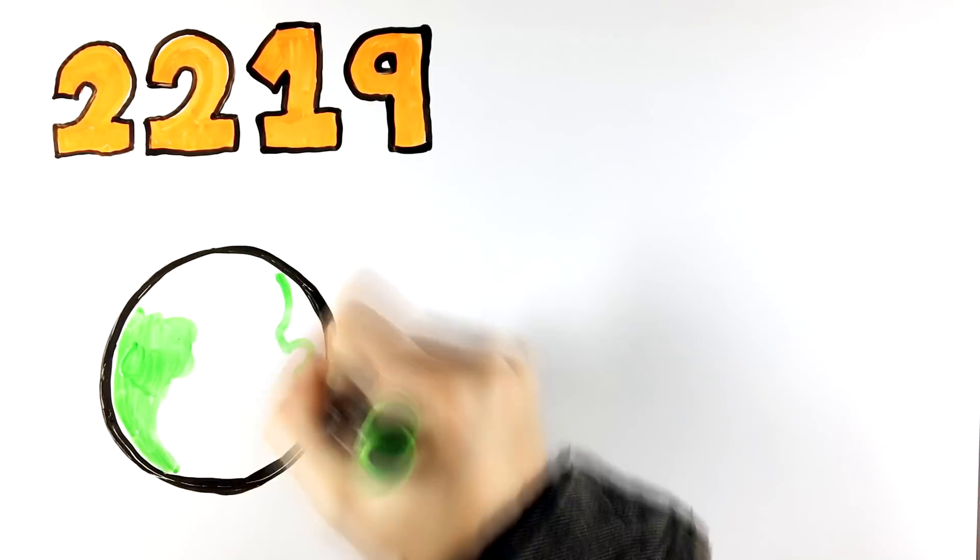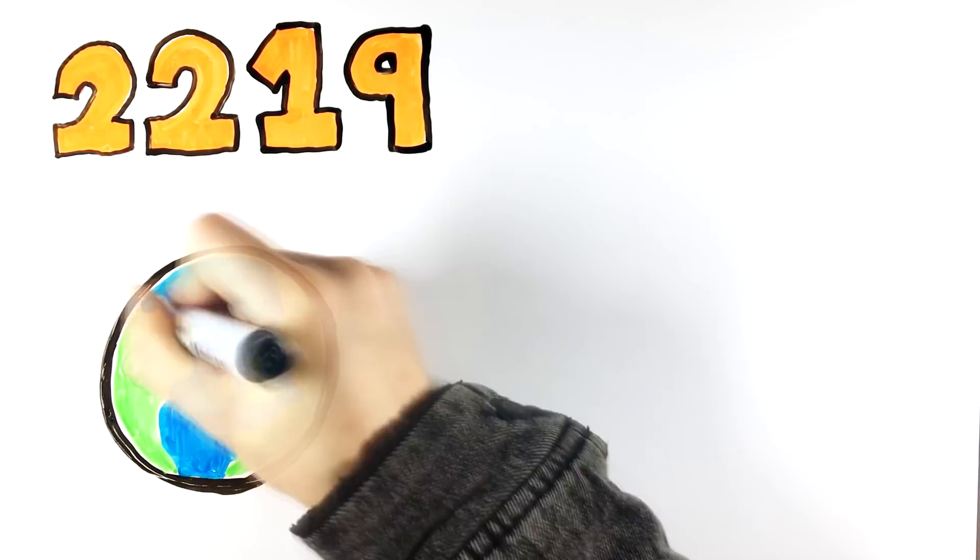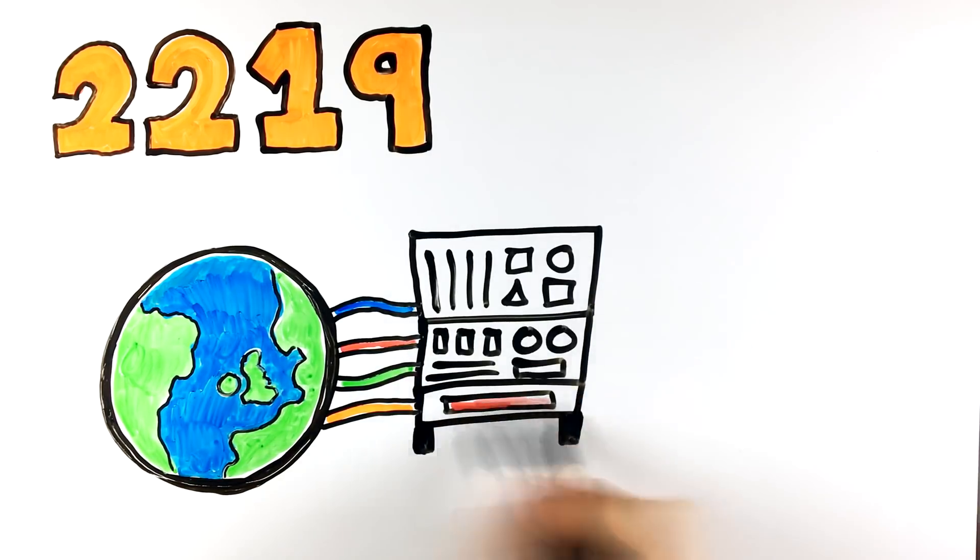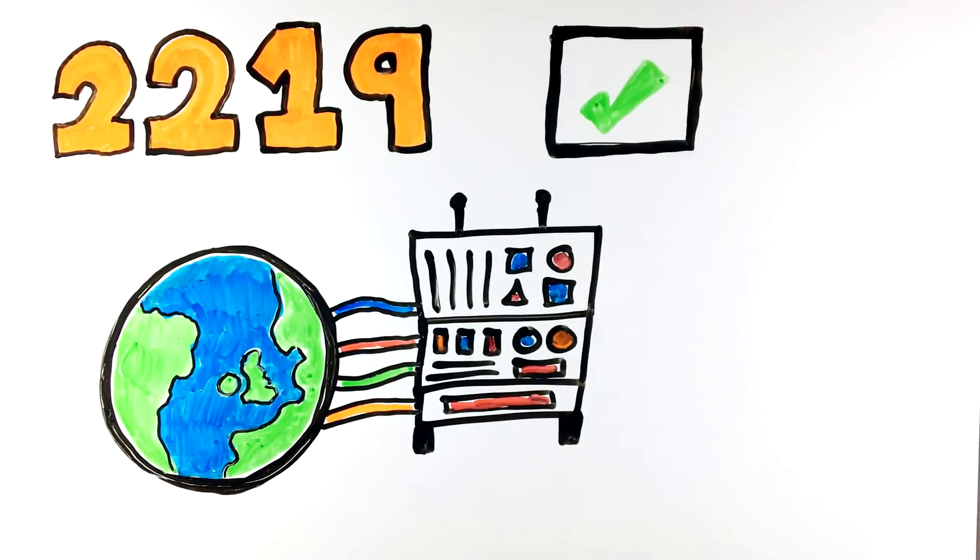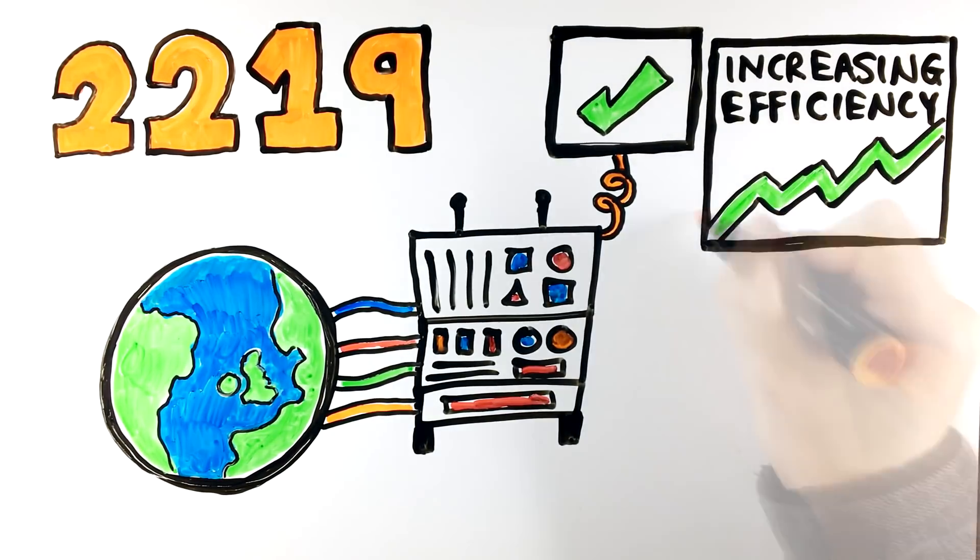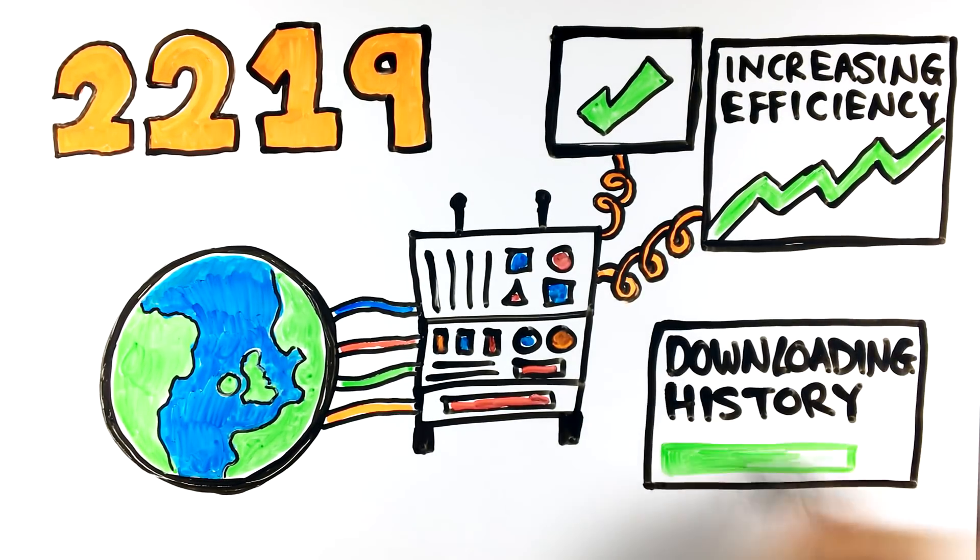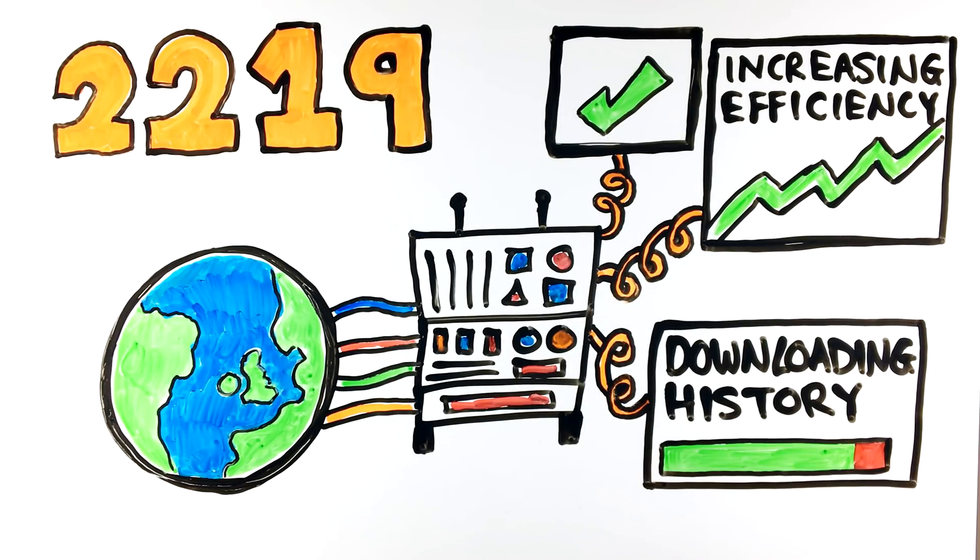So imagine a scenario maybe one or two hundred years in the future. We have an all-powerful AGI, perfectly running and maintaining an interconnected planet in perfect harmony. It learns and improves over time and makes society more and more efficient. It has also seen all of recorded history through the internet and can predict the future with incredible accuracy.